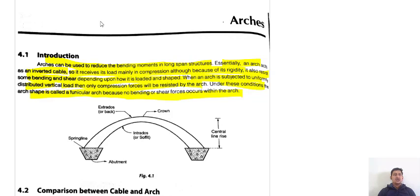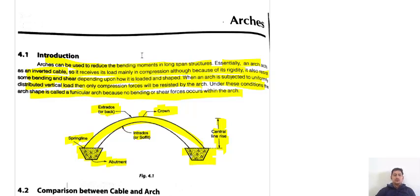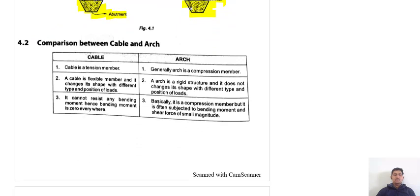When you are talking about the funicular arch, under these conditions the arch shape is like a funicular arch because no bending or shear force occurs. In this case, these two points are known as the abutments, which act as supports. The rise of this structure is known as the central rise, and the topmost point is known as the crown. The outer rear part is known as the extrados, and the front face is known as the intrados. This line is known as the spring line.